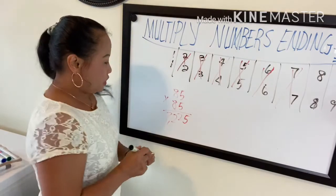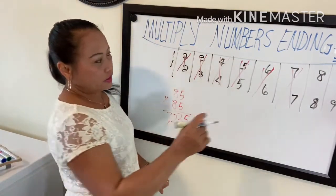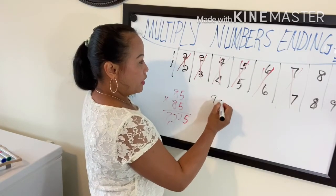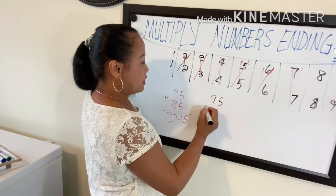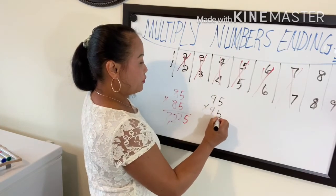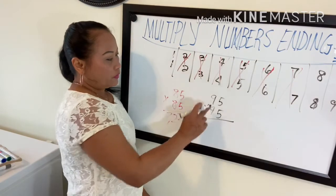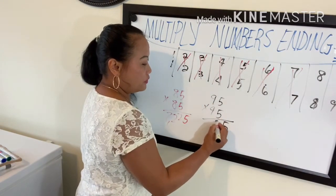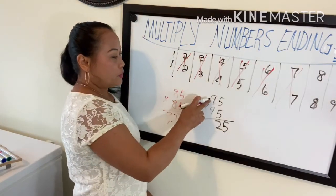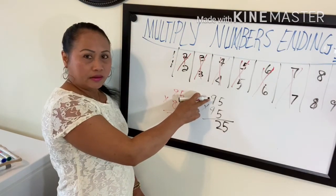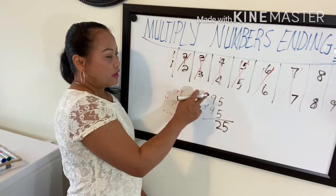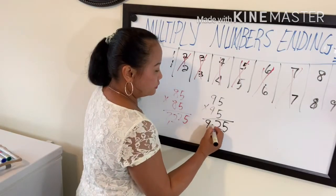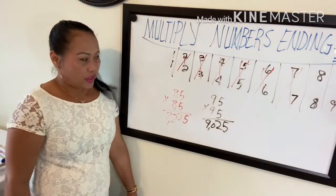Next, 95 times 95. Five times five again is 25. Add one to nine — nine becomes ten — and ten times nine is 90. So the answer is 9025.